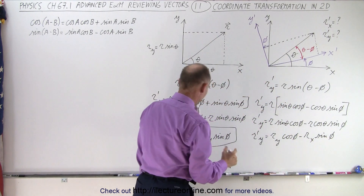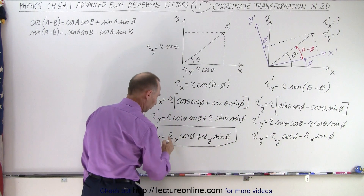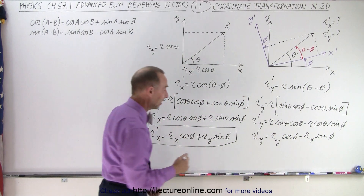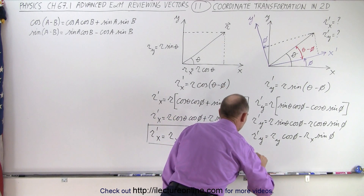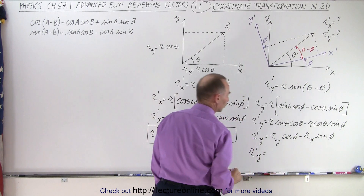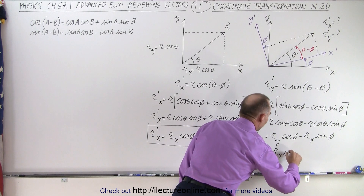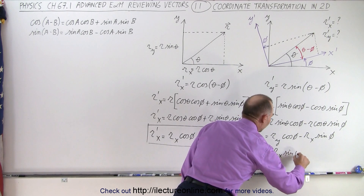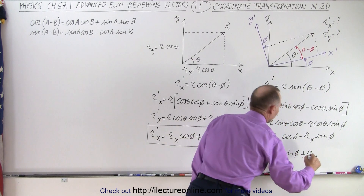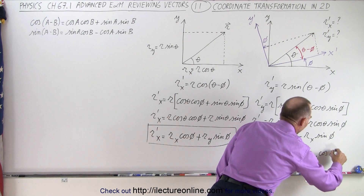Notice we have X and Y reversed here — we want X first and Y second — so let's reverse that. We can write R prime Y is equal to negative R sub X times sine of phi, plus R sub Y times cosine of phi.